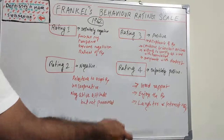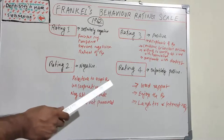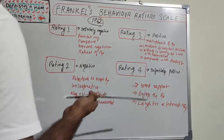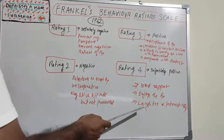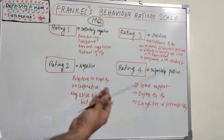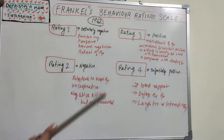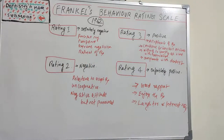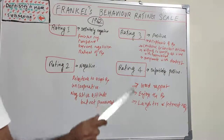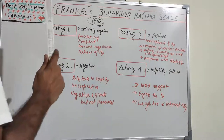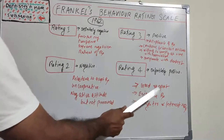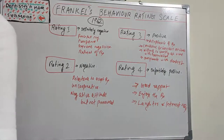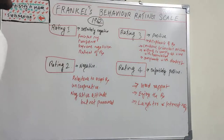Rating four is 'Definitely Positive.' This kid is not at all difficult to manage — they literally enjoy the treatment, show very good rapport with the dentist, laugh at the dental clinic, and show interest in the treatment. So to summarize: rating one is Definitely Negative, two is Negative, three is Positive, and four is Definitely Positive. That is Frankl's Behavior Rating Scale. I will come up with a new topic on dentistry and more — thank you.